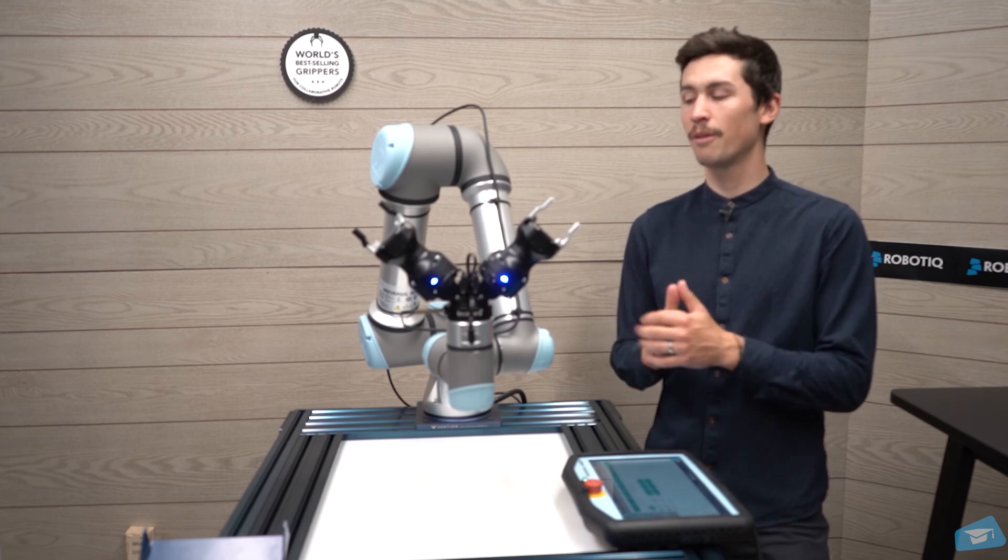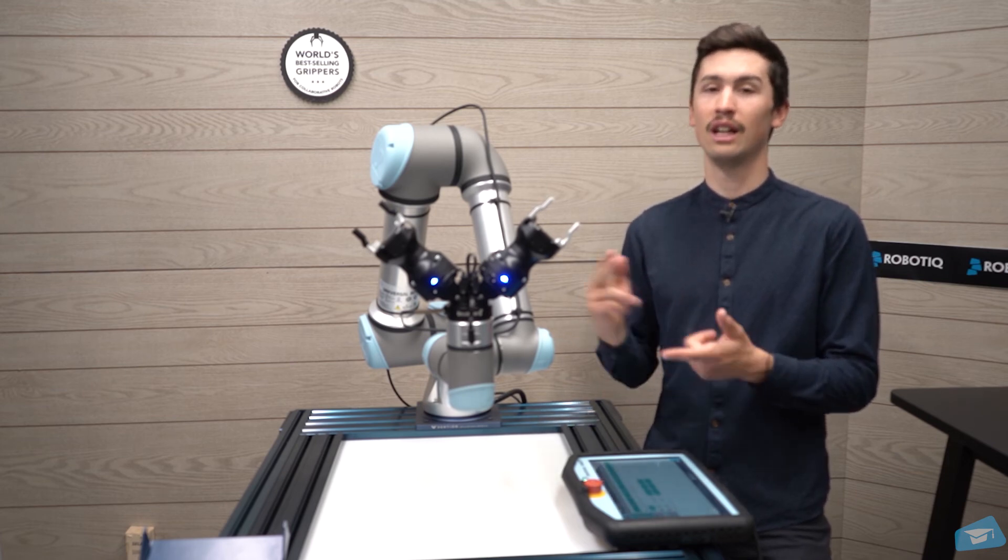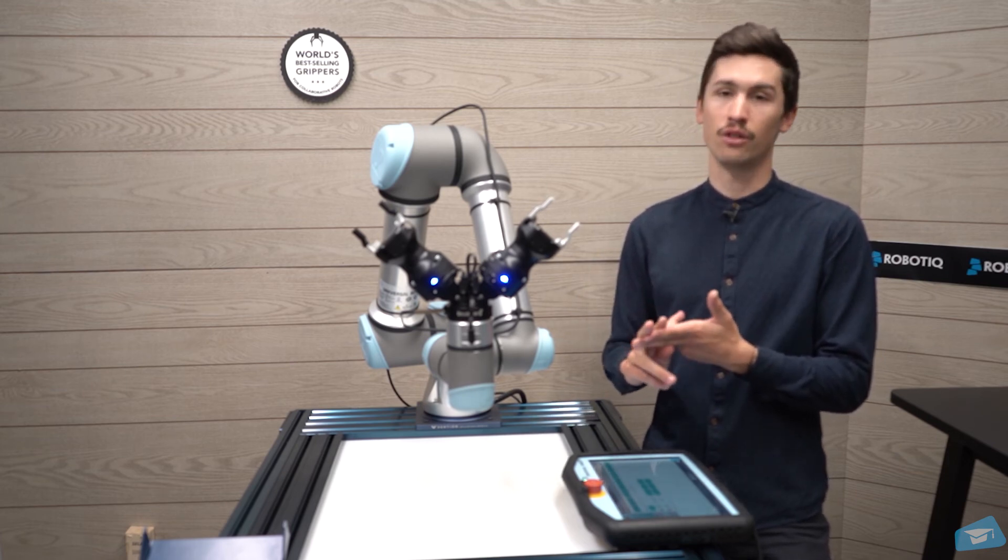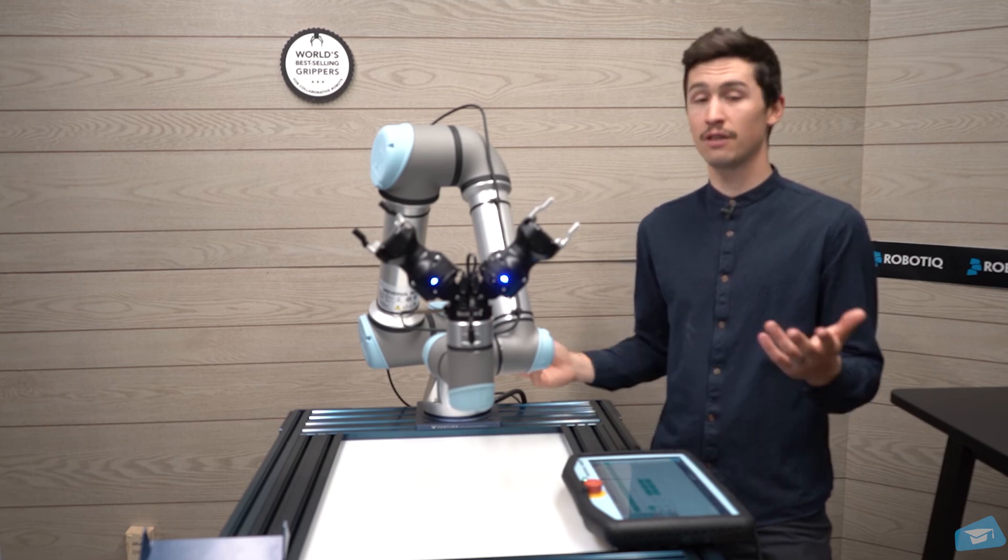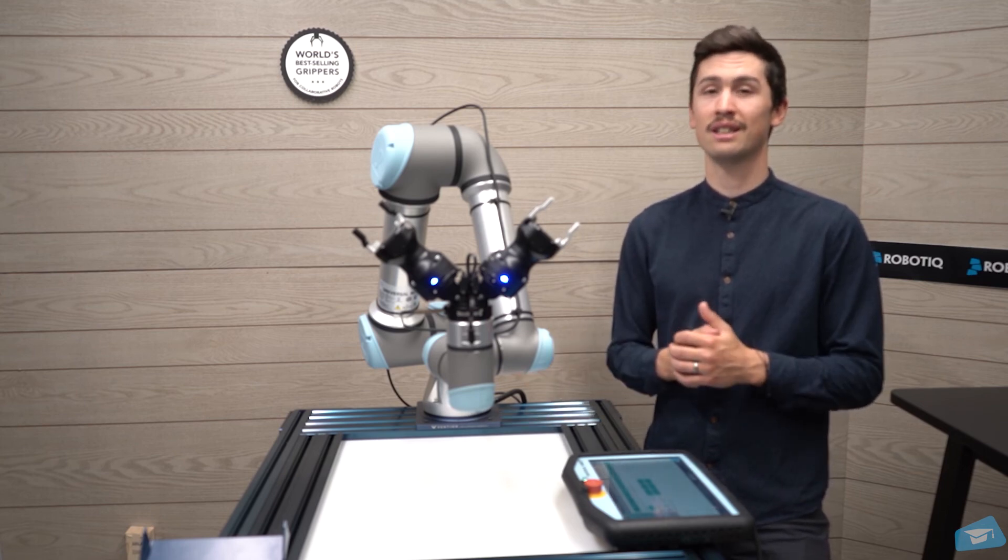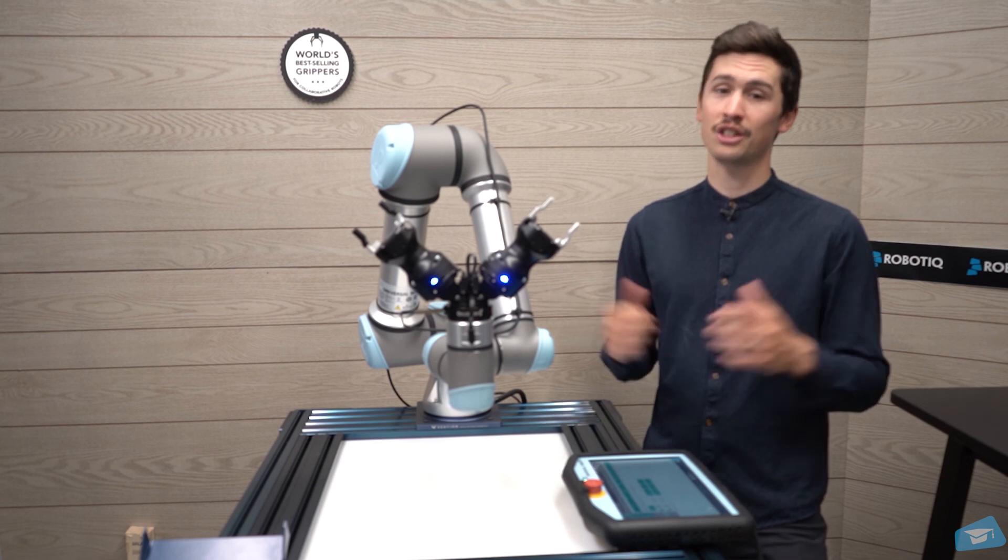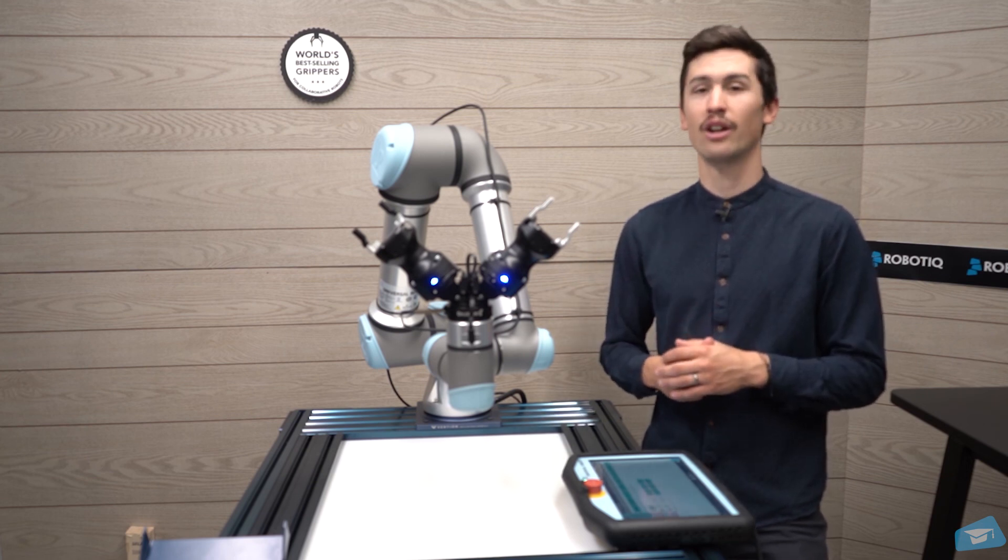If you want to use the wrist camera, make sure to take a look at the electrical and calibration procedure video. So that's it for the CNC machine tending kit installation video. Join us in the next video to break down the barriers to automation.